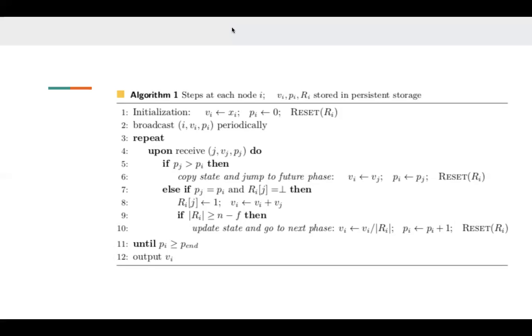For each node i, at the beginning of phase pi, it resets its message counter ri to a zero vector of length n, and then sets ri of i to 1. Every time when i receives a message v and p from another node j, it checks the phase number p of the received message. If p is higher than pi, then node i directly copies the received state and jumps to that future phase. More specifically, node i updates its local state to vi equals v, and updates its phase to pi equals p.